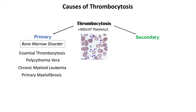The other main category is secondary causes, which is where most cases of thrombocytosis reside. We call this reactive thrombocytosis. Whereas in primary thrombocytosis there is a bone marrow disorder producing platelets on their own, in secondary causes the platelets are being produced in response to some other underlying cause.